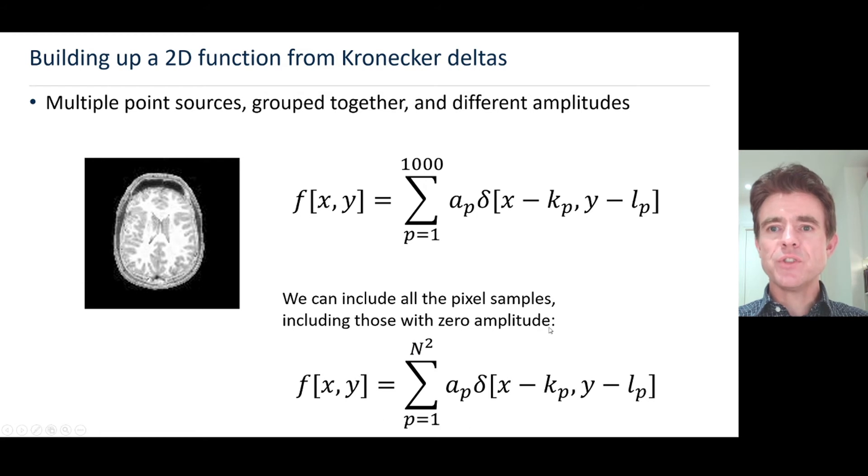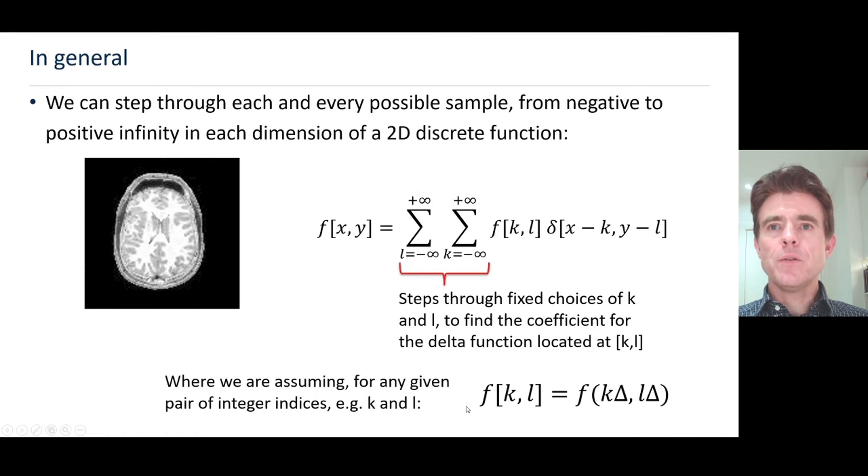We're almost at our description of the 2D function. The thing I need to now do is just substitute for that ap to say the amplitude of the point source at position kp, lp was just the function itself evaluated at that position k, l.